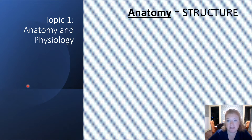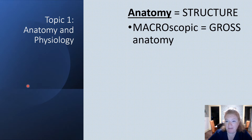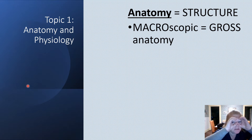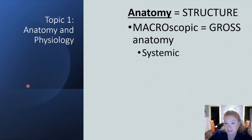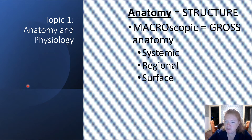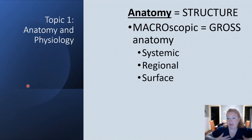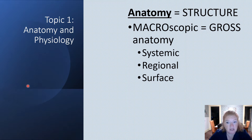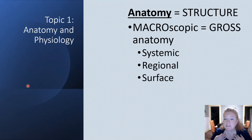Remember, anatomy is structure. We have macroscopic or gross anatomy — that doesn't mean disgusting, it means you can see it with your eyeballs. There are three types: systemic, regional, and surface. Systemic is by system; regional is by region, like cephalic, cervical, or thoracic. And surface means you can see it from the outside — evidence of tendons, bones, and blood vessels from the surface.